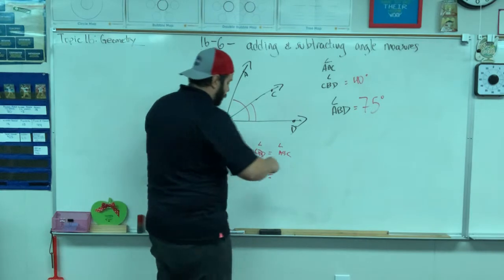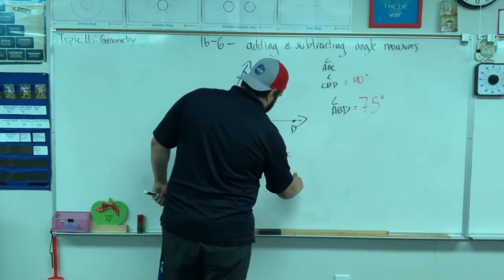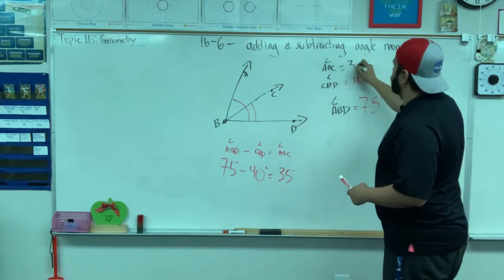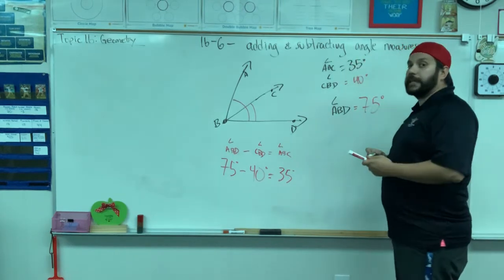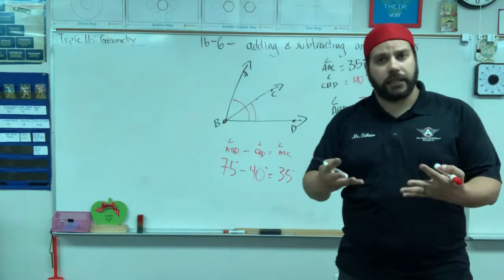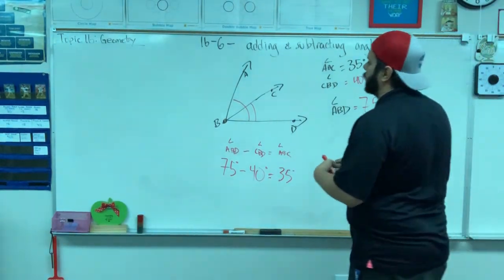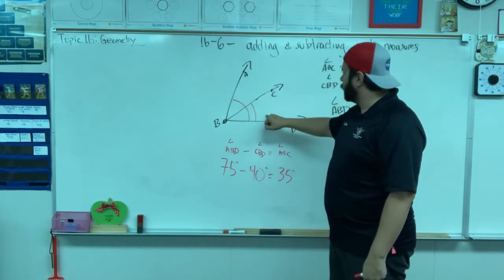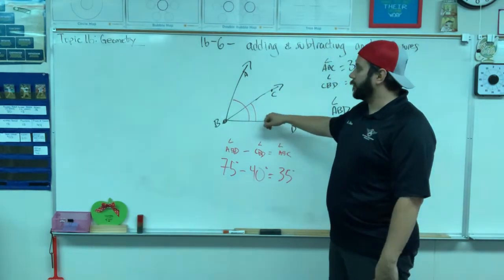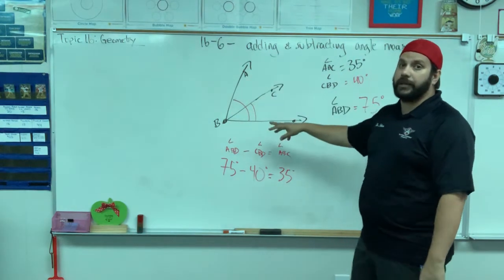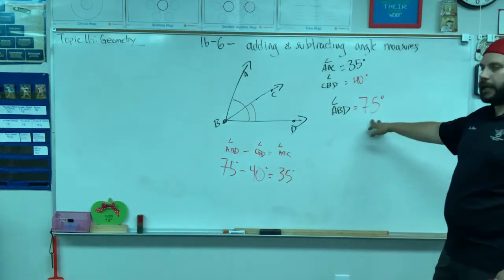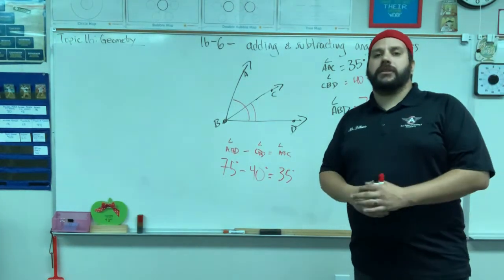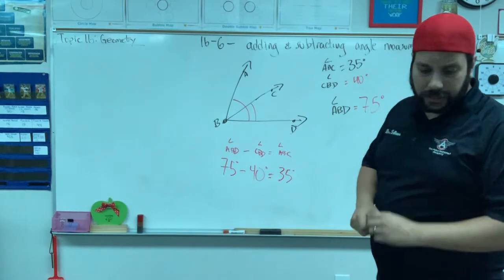Let me show you: 75 degrees minus 40 degrees equals 35 degrees. Therefore angle ABC will equal 35 degrees. Let's work backwards from that and double check to make sure that makes sense. So if you have 35 plus 40, that gives you a total of 75, so therefore my main angle should be 75, and there it is, 75 degrees.